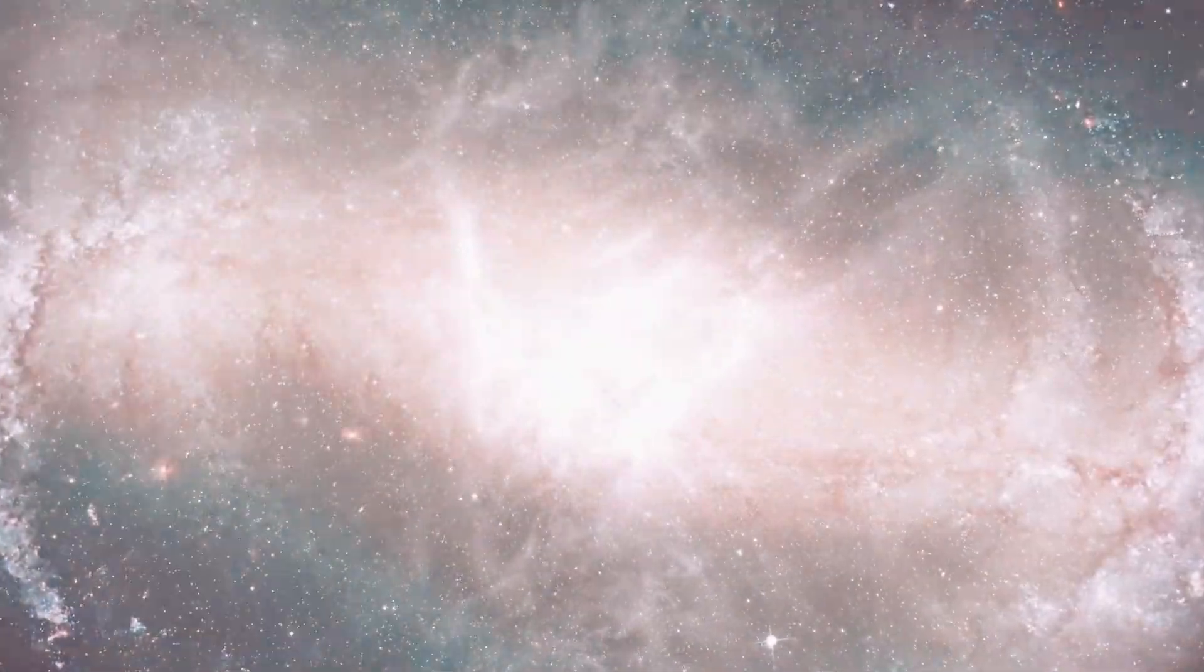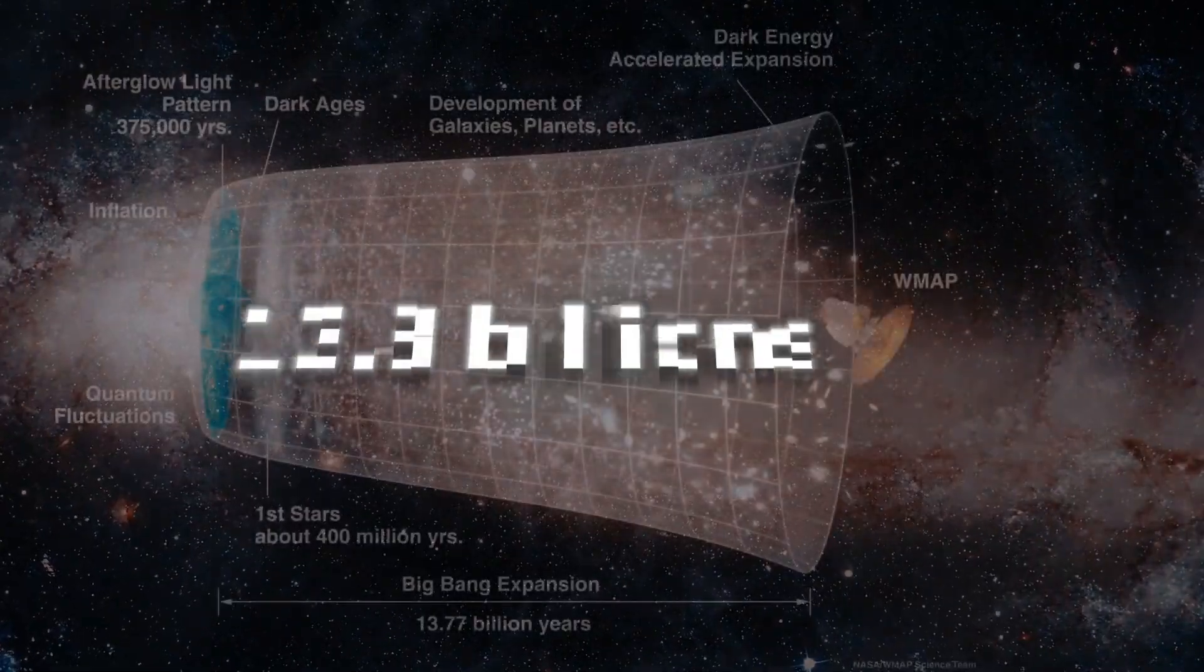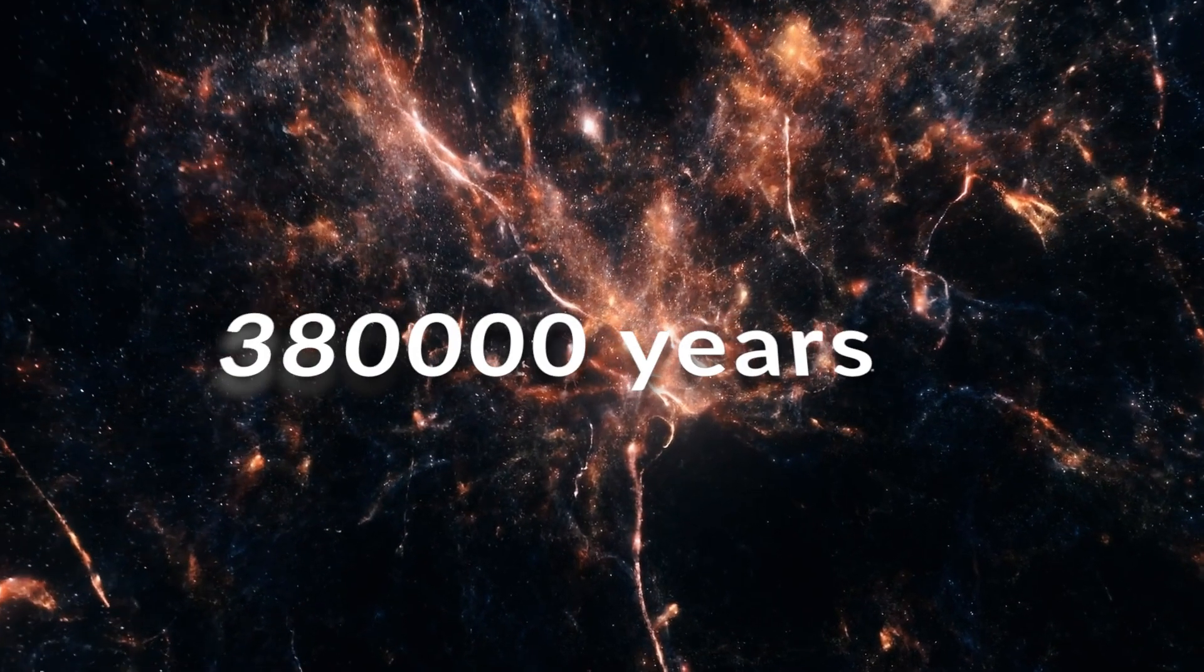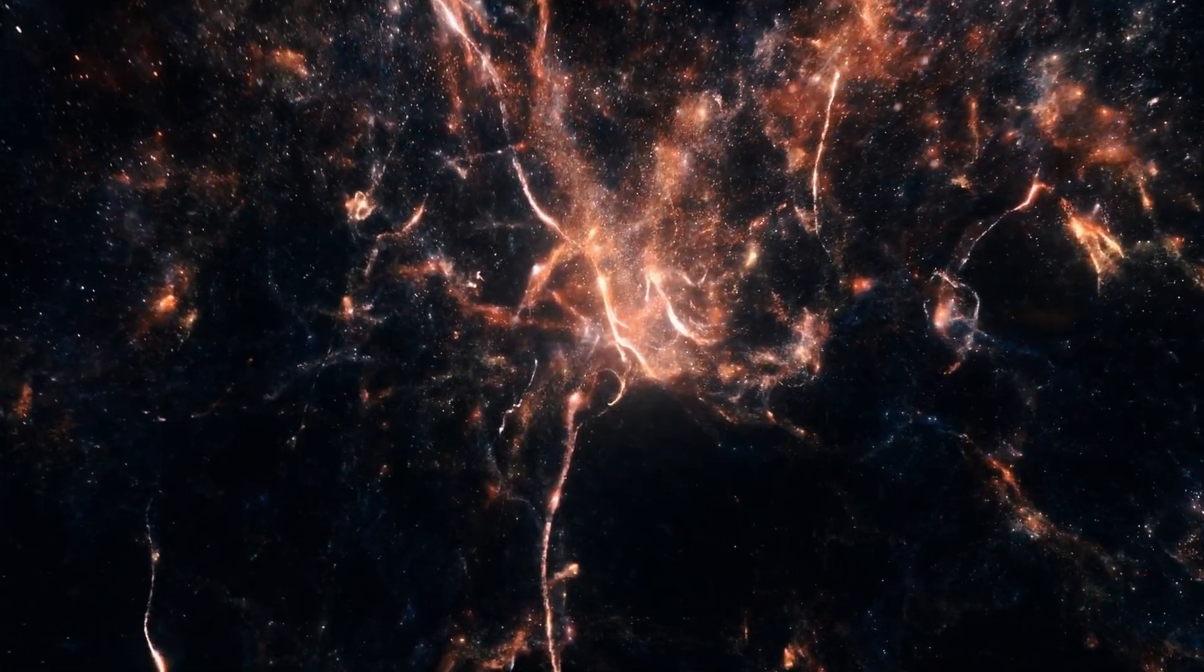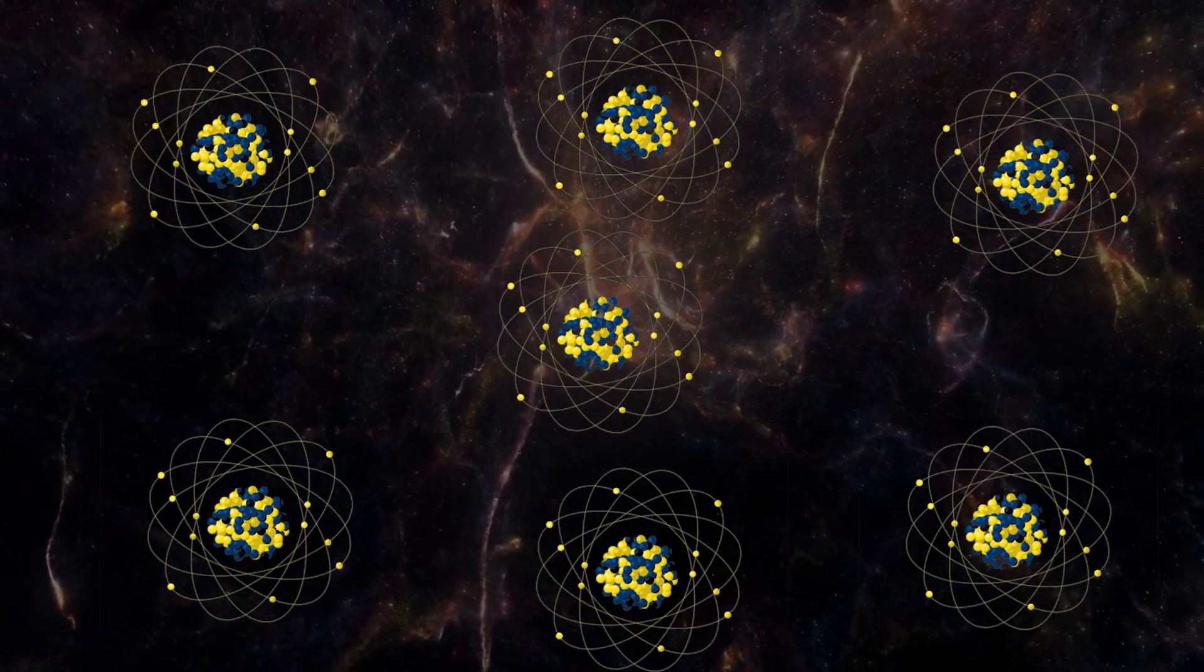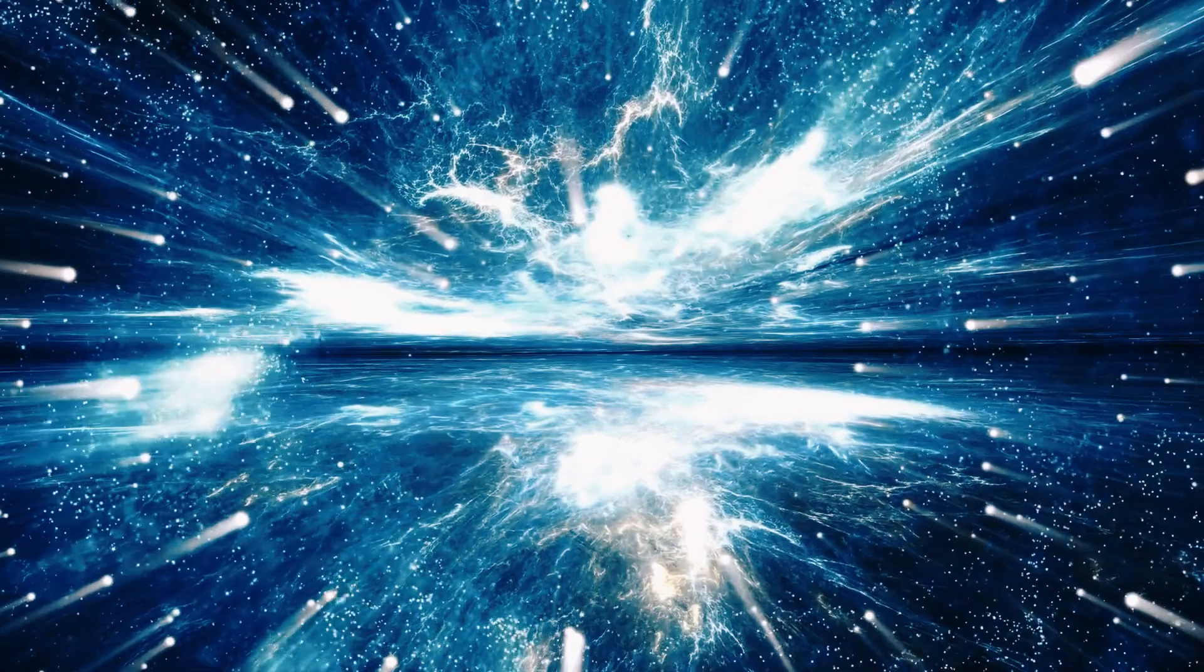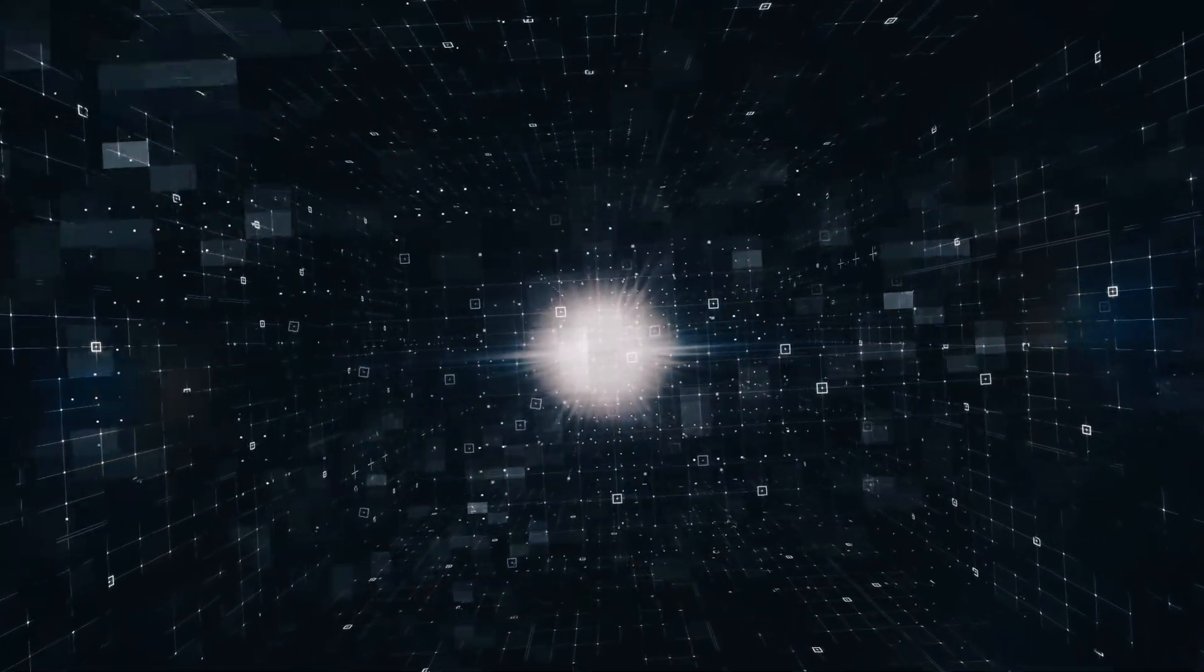According to Big Bang theory, our universe started approximately 13.8 billion years ago. 380,000 years after the Big Bang, temperature fell to 3,000 degrees, so atoms of hydrogen formed. For the first time, radiation and matter traveled freely. This is called CMB - Cosmic Microwave Background.